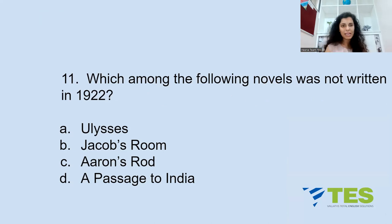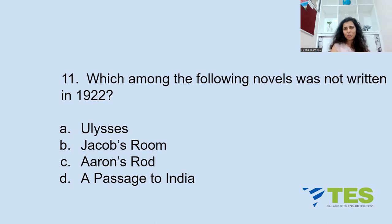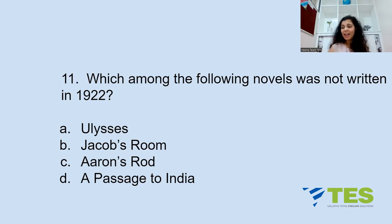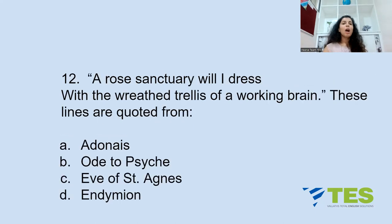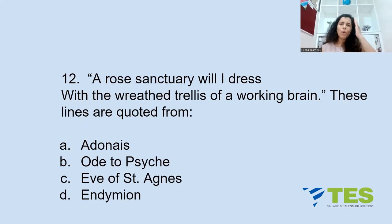Question 11: Which among the following novels was NOT written in 1922? A: Ulysses, B: Jacob's Room, C: Aaron's Rod, or D: A Passage to India. 'Ulysses,' 'Jacob's Room,' and 'Aaron's Rod' were all published in 1922, but 'A Passage to India' was published in 1924 — so the answer is D.